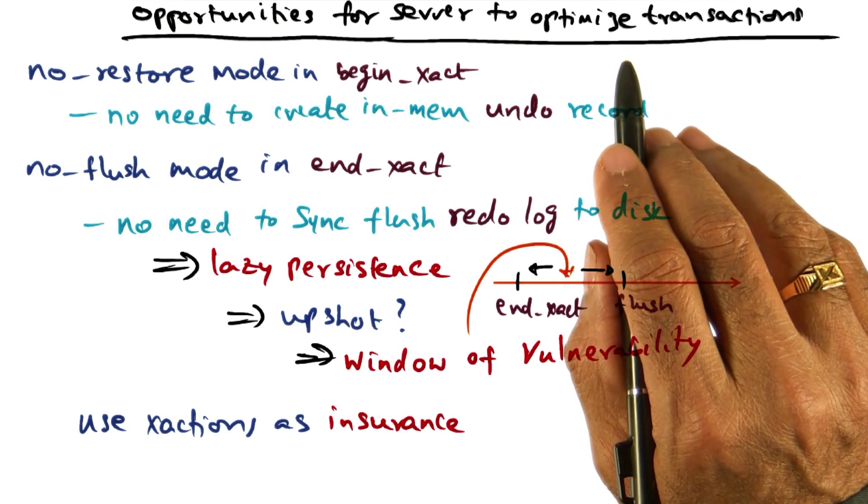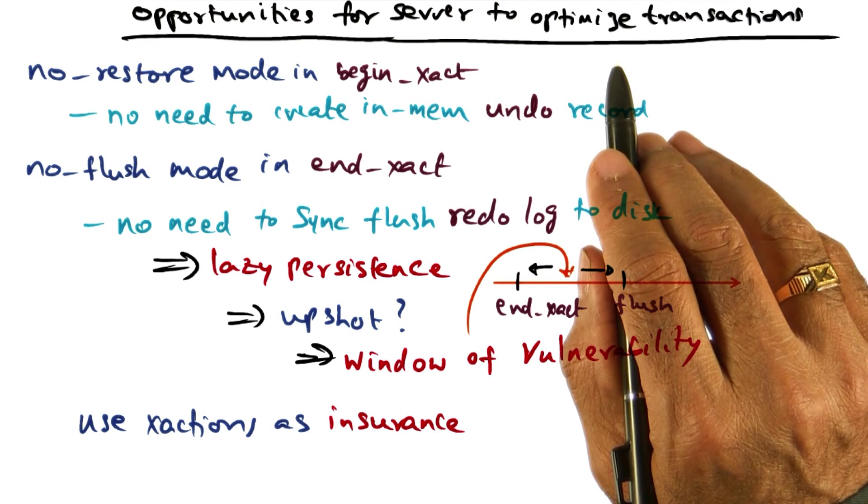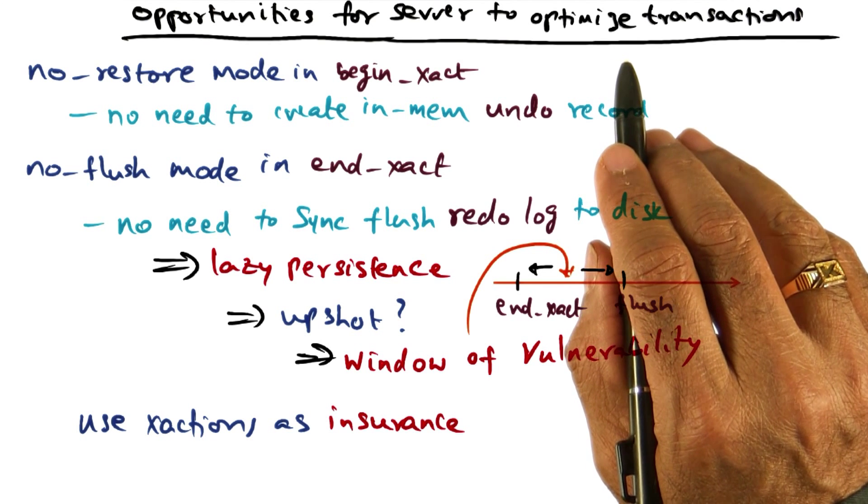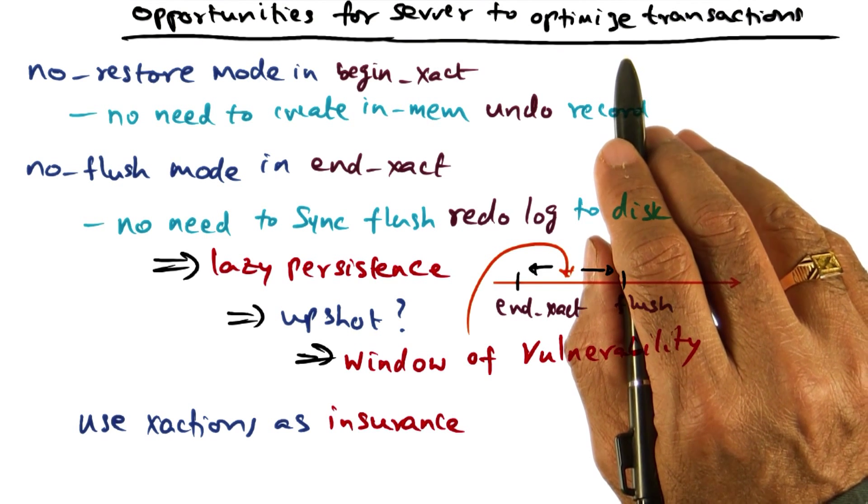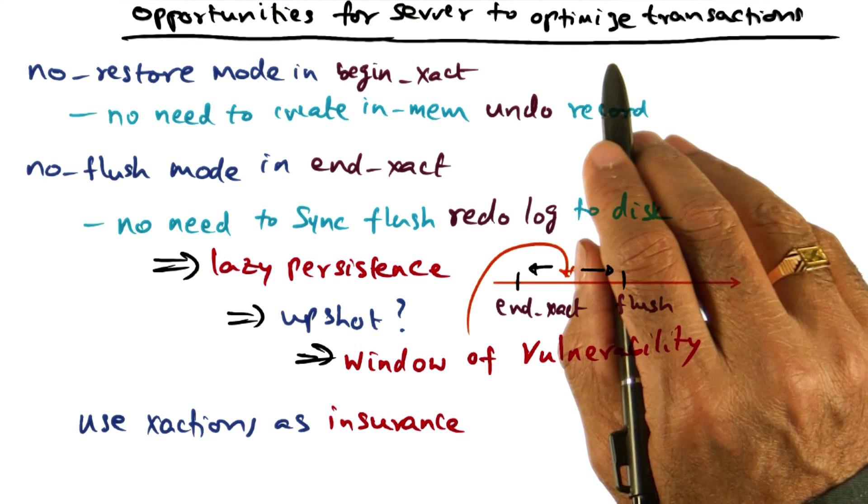And similarly, if the transaction commits, then we have to make sure that at the commit point, all the changes that have been made to in-memory copies of persistent data structures are committed to the disk. That's where synchronous IO comes in.